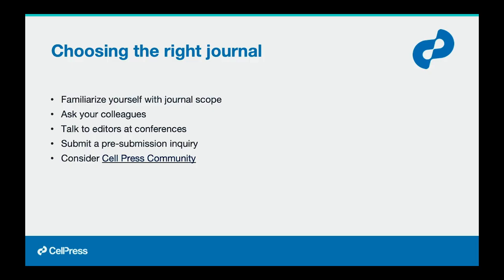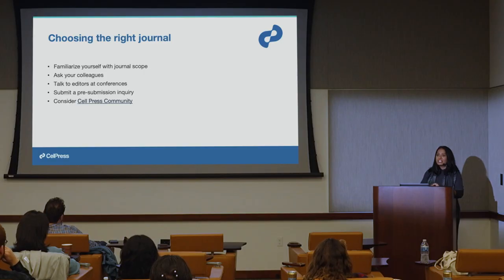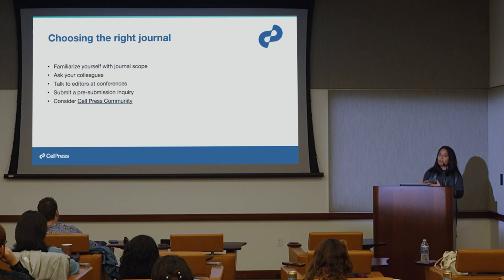One of the most common questions is: how do I choose the right journal? My advice is to look through your reference list — what journals pop up most? Read through those journals and see if you're finding the kind of research you're doing. It's also good to get outside input from someone not in your lab to give an honest appraisal of whether the manuscript has the breadth that your target journal would go for.